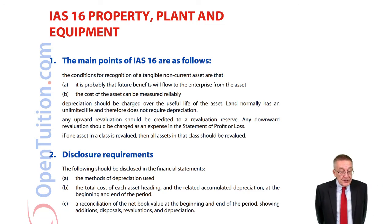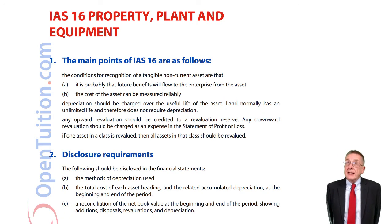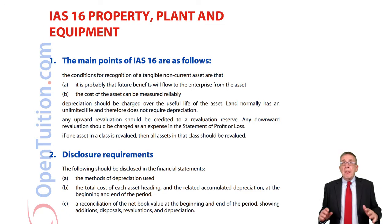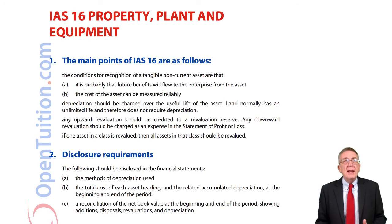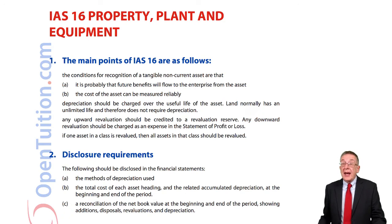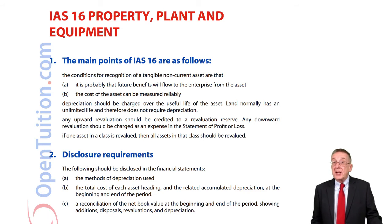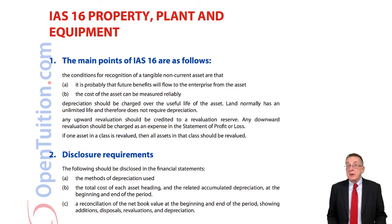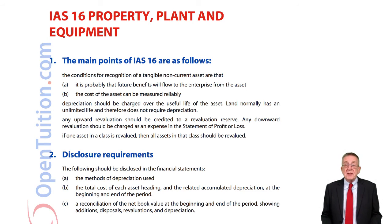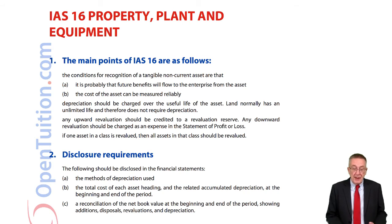Regarding the disclosure requirements — as stated in earlier lectures, there's no rule as to how we depreciate. We depreciate in whatever way we think is the most sensible. For the exam, it's straight-line depreciation or reducing balance. However, there has to be a note attached to the financial statements saying what methods of depreciation have been used — for example, buildings depreciated straight-line over 100 years, or cars at 25% reducing balance. We must state the methods used.